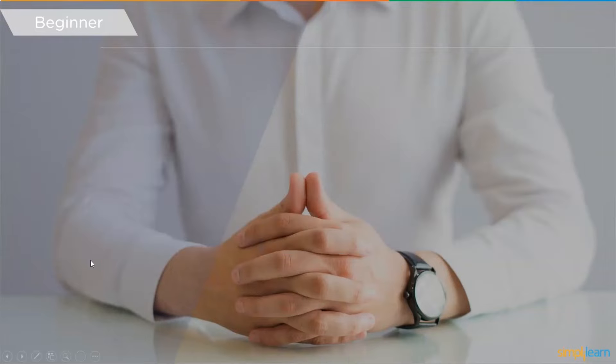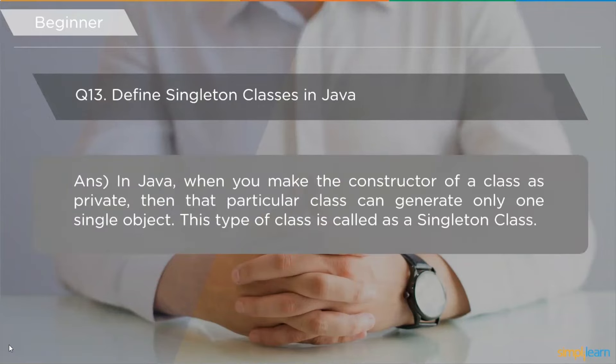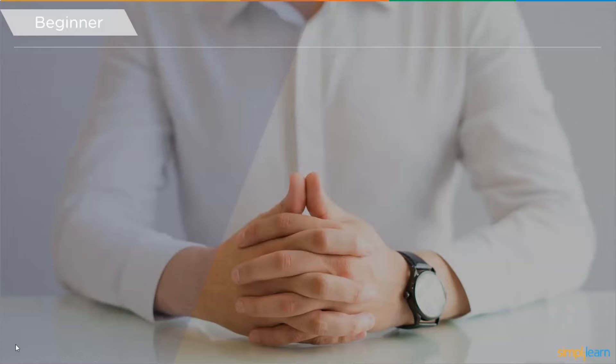The next question is: define singleton classes in Java. In Java, when you make the constructor of a class private, that class can generate only one single object. This is why such classes are called singleton classes.